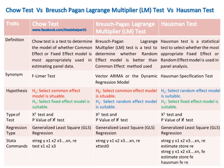The regression type in the Chow test, Breusch-Pagan Lagrange Multiplier (LM) test, and Hausman test is Generalized Least Squares (GLS) regression. The static commands of the Chow test, Breusch-Pagan LM test, and Hausman test are given for comparison.